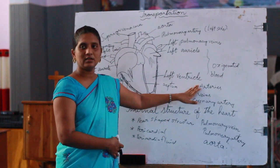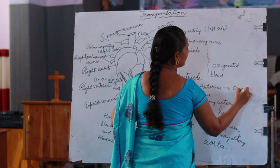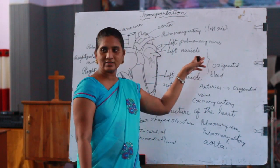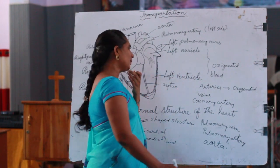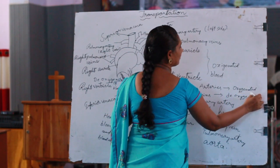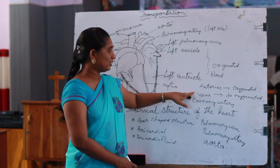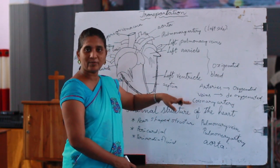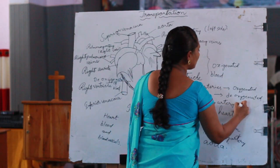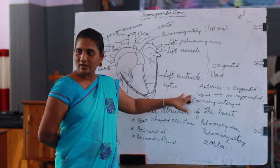The walls of the arteries are thicker than the veins. Arteries contain oxygenated blood, which supplies blood to various organs from the heart to the remaining parts of the body. Veins contain deoxygenated blood, which collects deoxygenated blood from the various organs back to the heart.